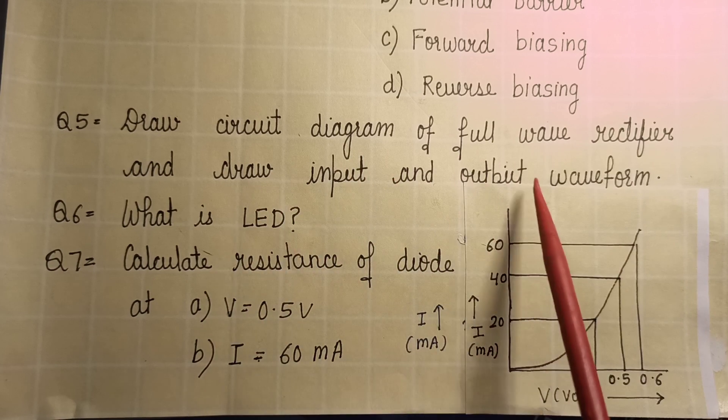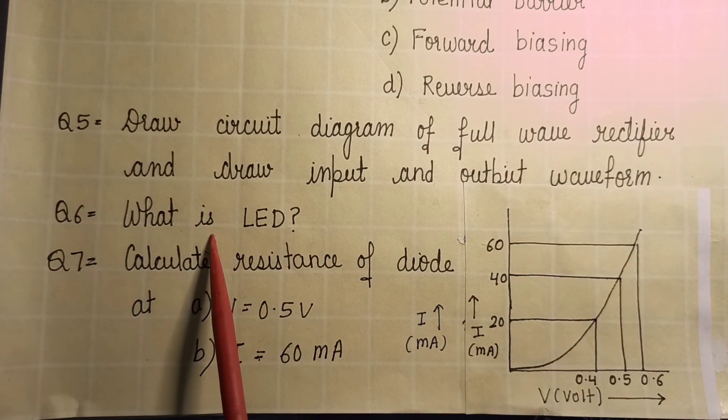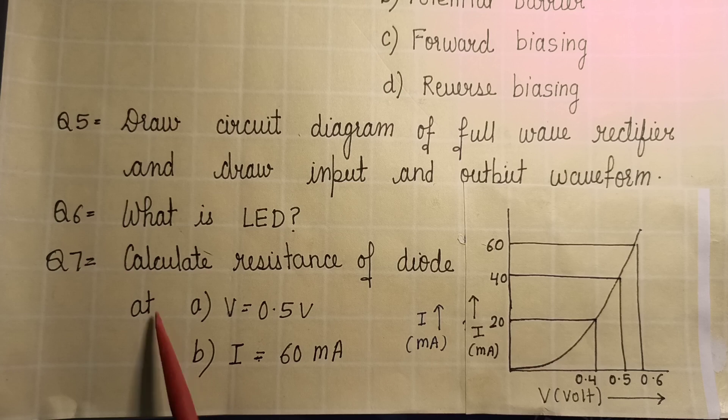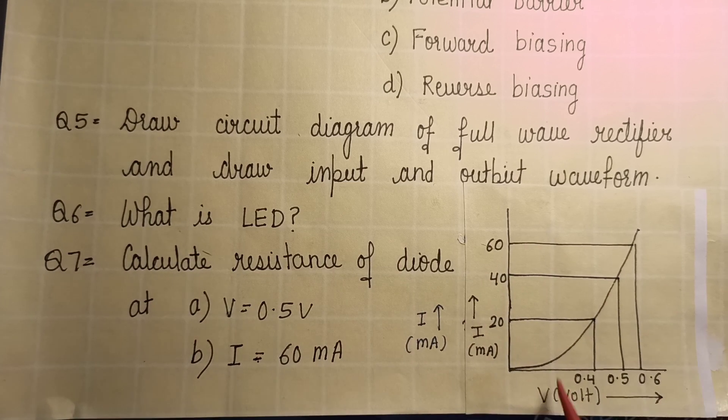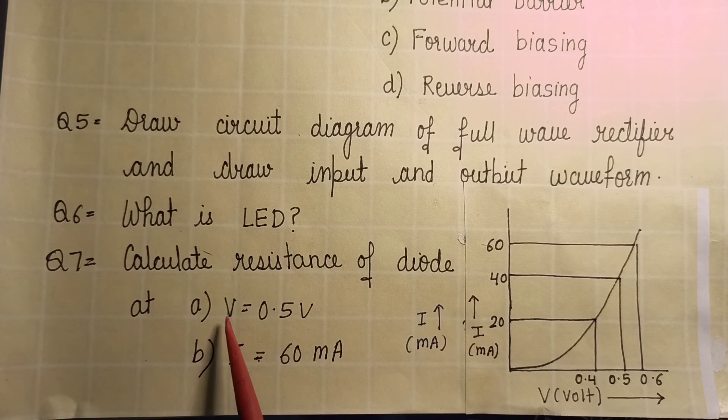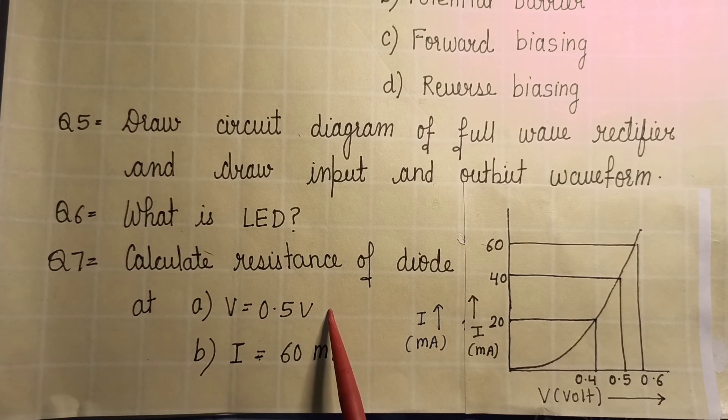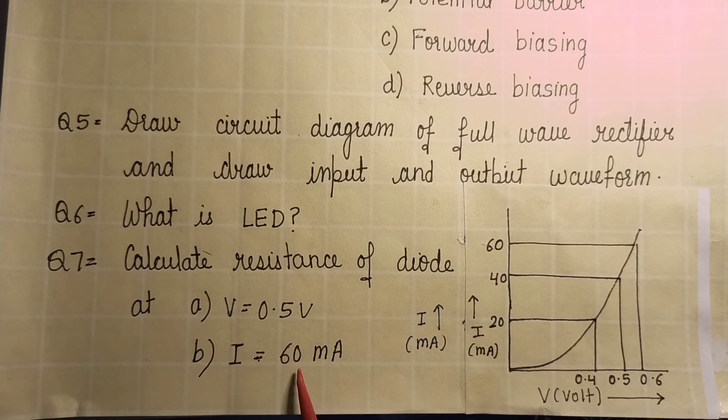What is light emitting diode? And this question in which simple VI characteristic is given and you are asked to calculate resistance of diode at potential 0.5 volt and at the forward current 60 milliampere. So just check out whether you know these answers or not.